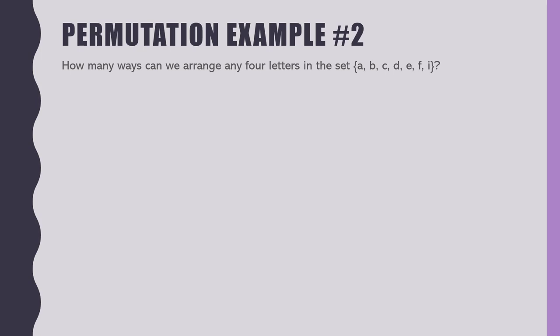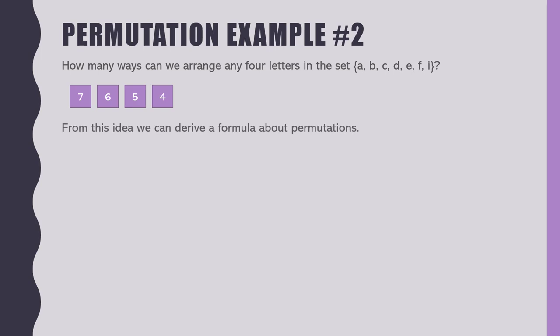How many ways can we arrange four of the letters from {A, B, C, D, E, F, I}? For the first block, 7 choices; second block, 6; third, 5; fourth, 4. That's 7 × 6 × 5 × 4. Now, 7 × 6 × 5 × 4 = (7 × 6 × 5 × 4 × 3 × 2 × 1) / (3 × 2 × 1) = 7! / 3!. And 3 = 7 - 4, so this equals 7! / (7-4)!. This is the general permutation formula.